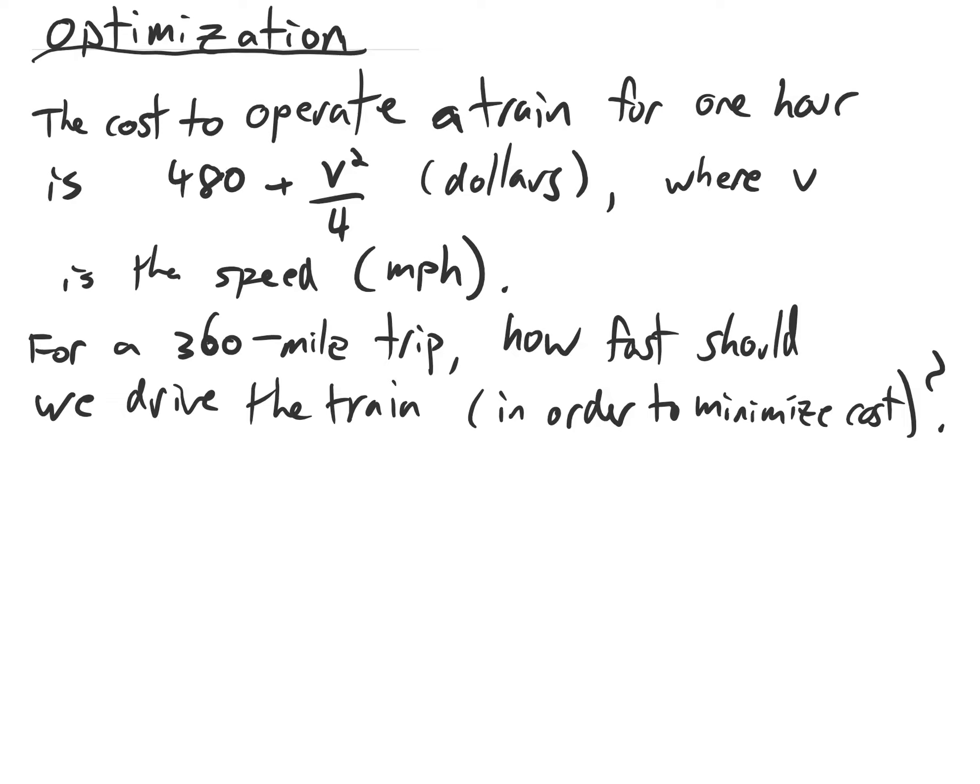Let's look at an optimization problem. Imagine that the cost to operate a train for one hour in dollars is 480 plus v squared over 4, where v is the speed.